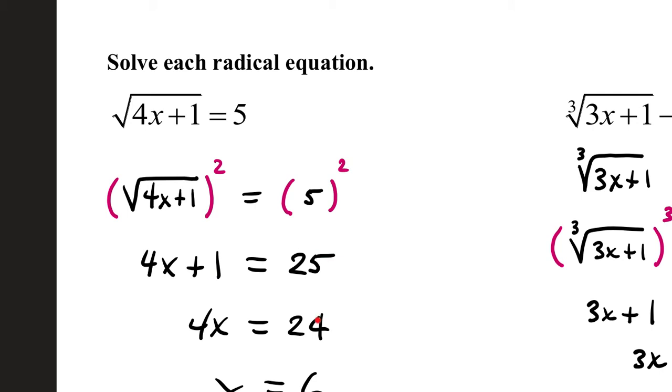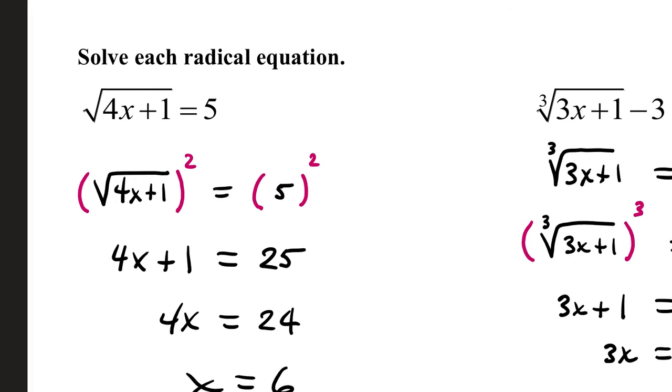Subtract 1, you get 24, divide by 4, and you get 6. Checking your answer, 4 times 6 is 24, plus 1 is 25, square root of 25 is 5. So that checks out.